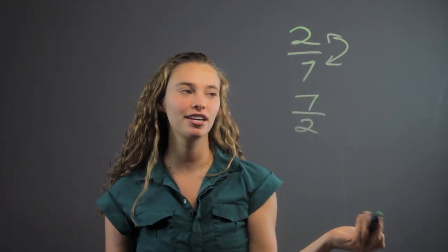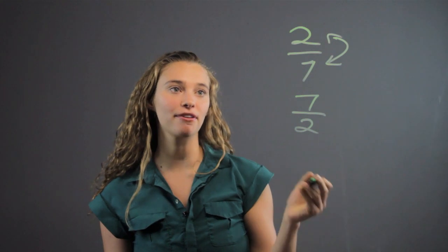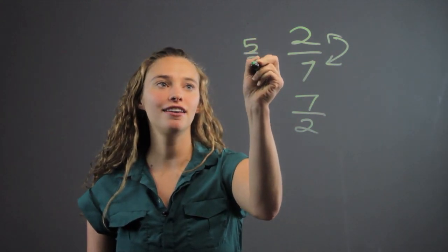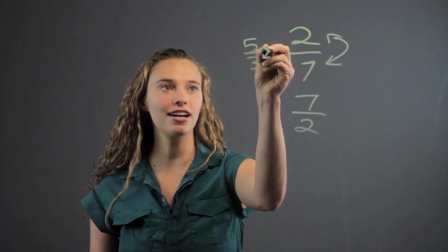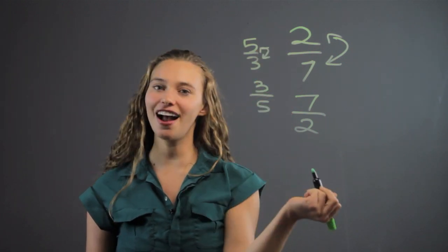If you have already an improper fraction, like 5 over 3, the reciprocal, you flip it, and it becomes 3 over 5.